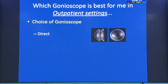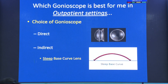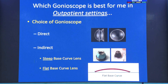Today our focus is on the outpatient settings. The choice of gonioscopy lenses is between direct and indirect. In indirect, you have two types: one is the steep base curve — because it is steep, there will be a gap when placed on the cornea, so you need a coupling fluid. The other is the flat base, which requires no coupling fluid since it rests flat on the cornea.